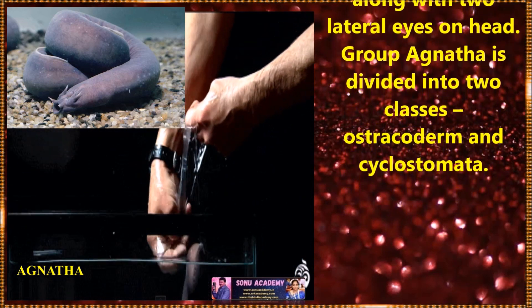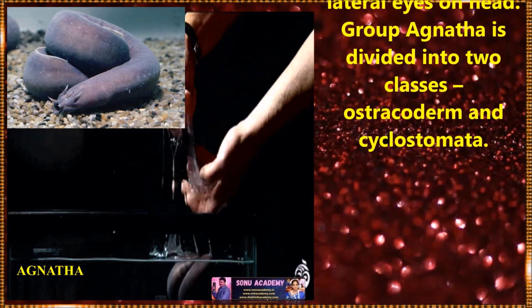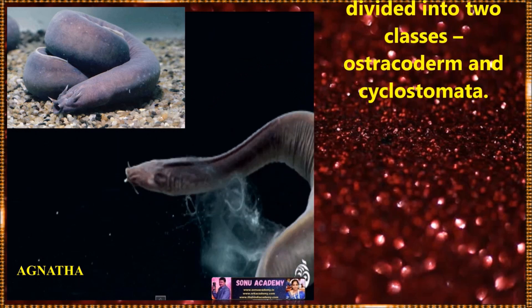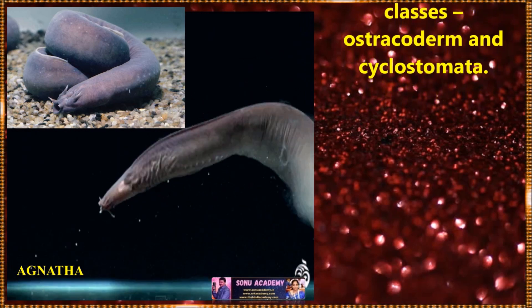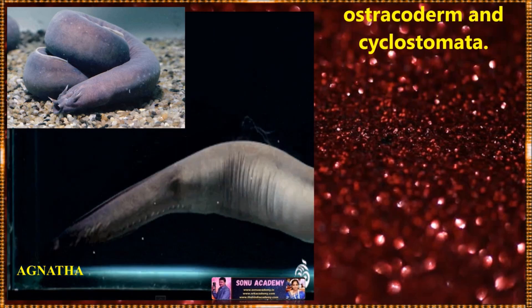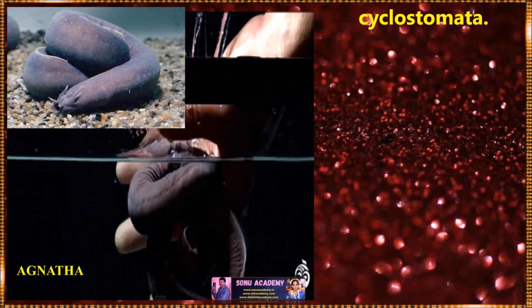The group Ajanatha is again divided into two classes: Osteocoderm and Cyclostomata.